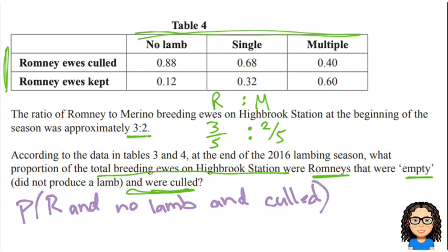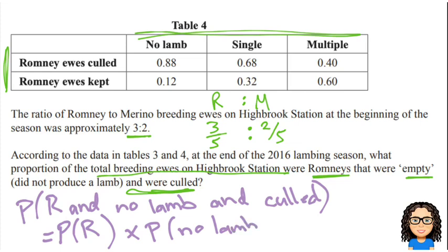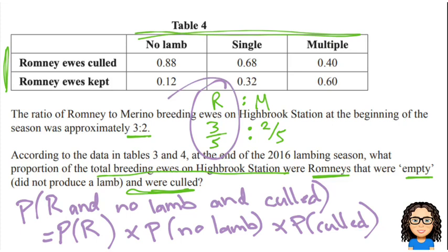That's the one I want to find. Now remember, probability AND means to multiply. So I need to find the probability of being a Romney ewe, and the probability of not getting any lambs, and the probability of being culled. Those are the three things I need to multiply together. The first thing I know is the probability of being Romney — that's three fifths.